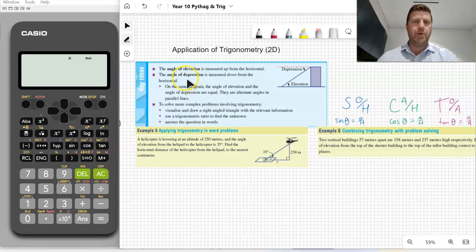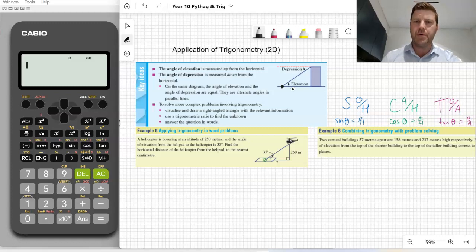First of all, we'll get straight into it. We're looking at angle of elevation and angle of depression. The angle of elevation is measured up from the horizontal. So in this diagram here, if an individual was standing on the ground here looking at the top of that building, the angle of elevation would be this angle in here from the ground level to the line of sight, the top of the building.